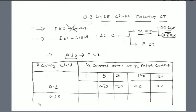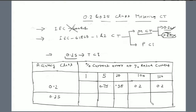For the 0.2S special class CT: this CT can also sense 1% of the rated current, but the error will be higher — at 1% the error is 0.75%. At 5% of rated current, it will produce 0.35% current error. At 20% of the rated current it gives 0.2%, at 100% it gives 0.2%, and at 120% it also gives 0.2%.